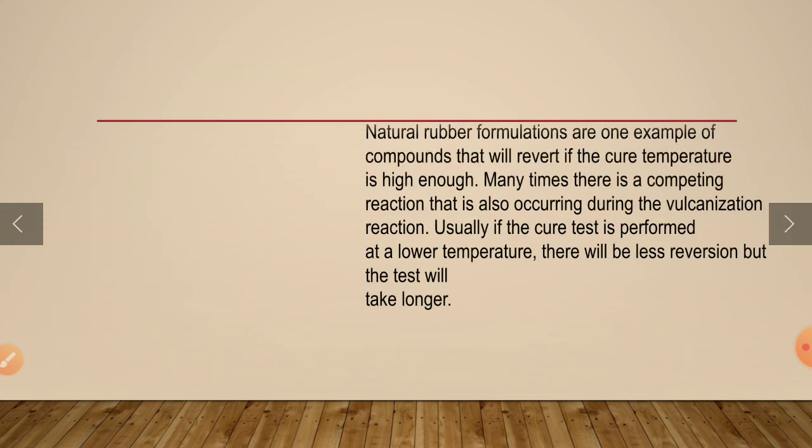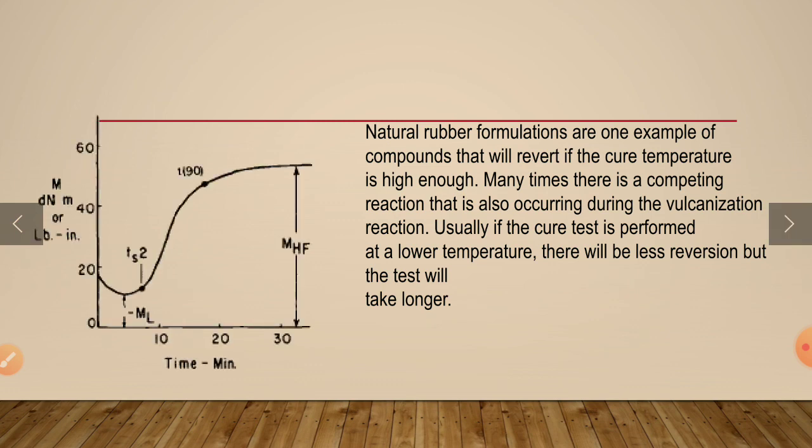Natural rubber formulations are one example of a compound that will get reversion — it tends to come back towards its origin position but cannot fully recover.